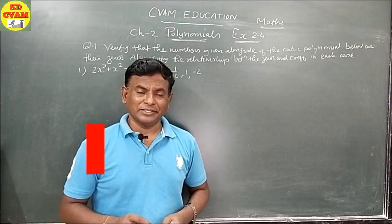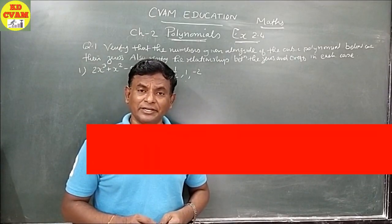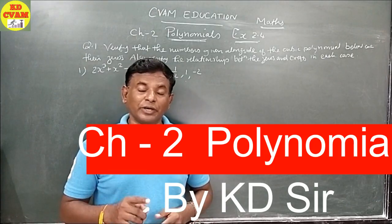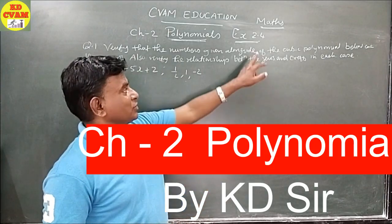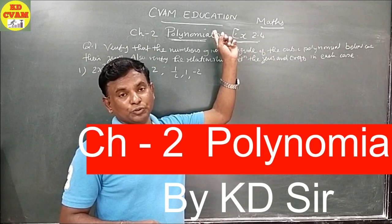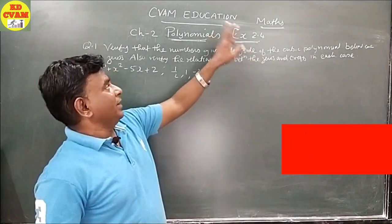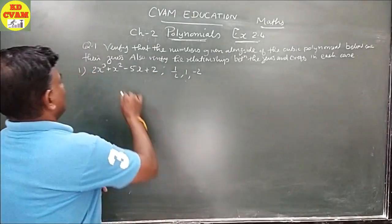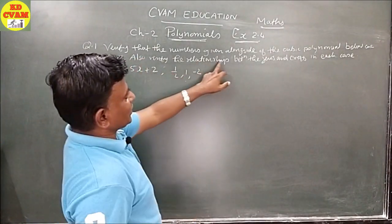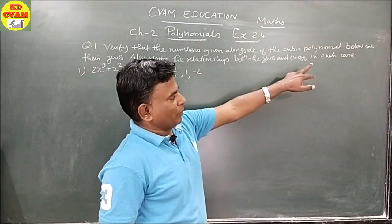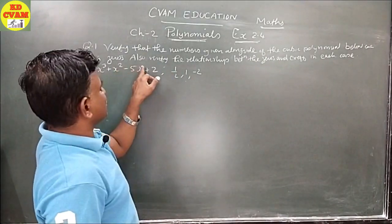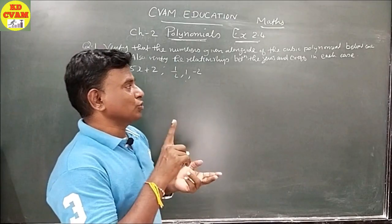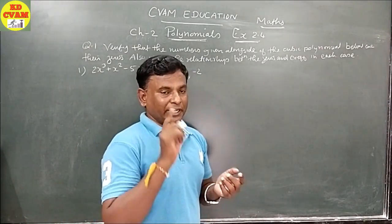Hi students, good morning. This is KD Sir again from SIVAM Education. Today we are going to continue with Exercise 2.4 of Chapter 2, Polynomials. Now let us start with question number 1: verify that the numbers given alongside the cubic polynomial are their zeros, and also verify the relationship between the zeros and the coefficients in each case.